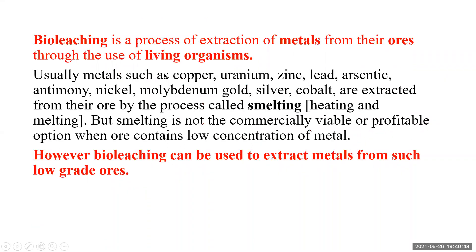Usually metals like copper, uranium, zinc, lead, arsenic, antimony, nickel, molybdenum, gold, silver, cobalt, etc. are extracted from their ores by the process of smelting. Smelting is a process of heating to a very high temperature and melting so that we can extract the metals from their ores.